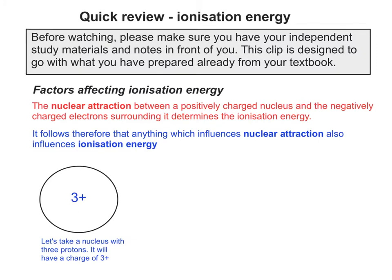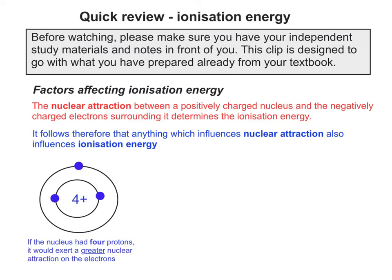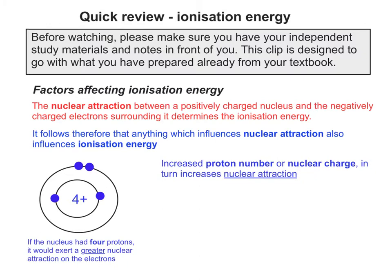So if we take a nucleus that has three protons, it's obviously going to have a charge of 3+. We give it its requisite number of electrons, with two in the first shell and one in the second. But if the nucleus had four protons, because it's now got a charge of 4+, it would exert a greater nuclear attraction on the electrons. So our first factor must be proton number or nuclear charge — the greater the proton number, the greater the nuclear attraction.